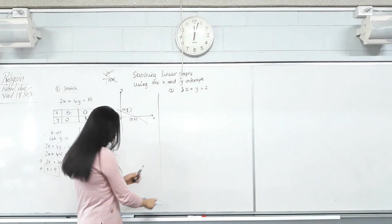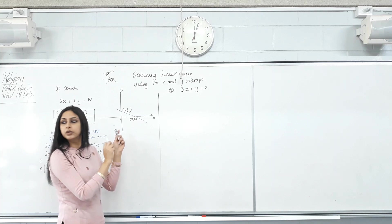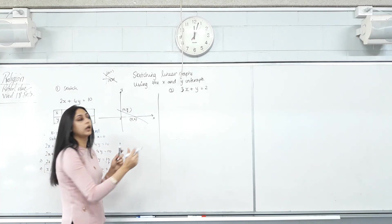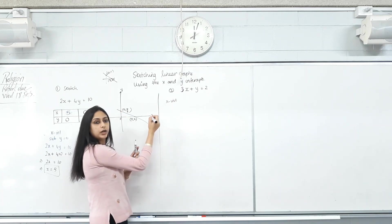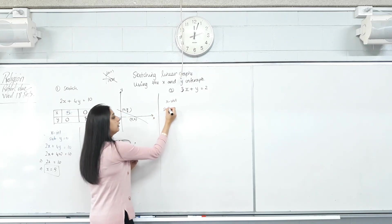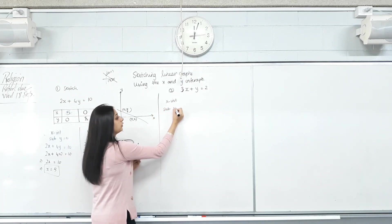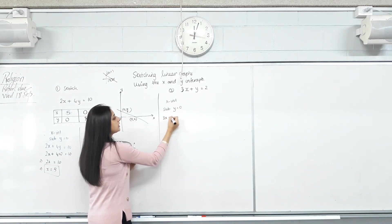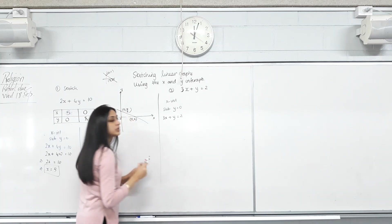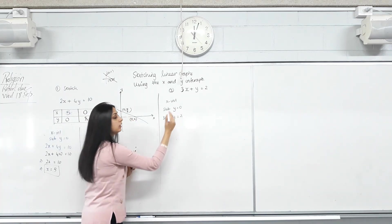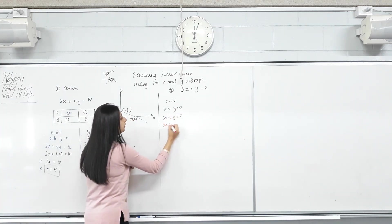Question? Now, do I need a table? Question? Okay. Just write X intercept. How do we find the X intercept? We sub what's 0? Y equals 0. Copy the equation as it is. In this equation, wherever you see Y, you replace it with 0.